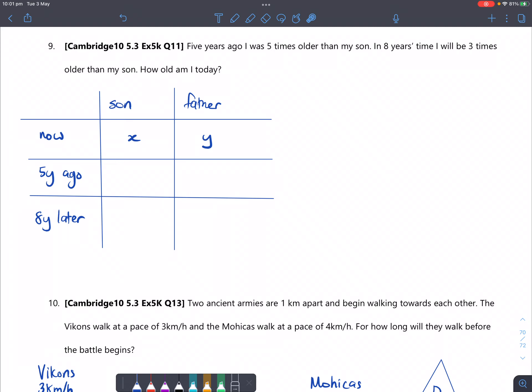What I tend to do with these questions is I put the two people either both in a column or both in a row. In this case I've put it into columns and I've now separated them such that I've stated that their age now is x years old for the son and y years old for the father.